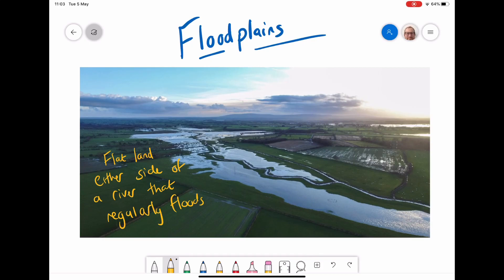Today I'm going to talk about another landform of the middle and lower course, and this is a floodplain. A floodplain is simply the flat land either side of a river that regularly floods.